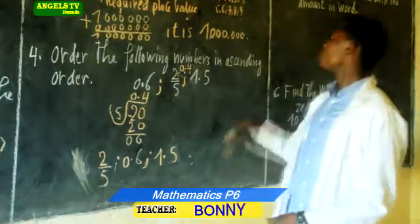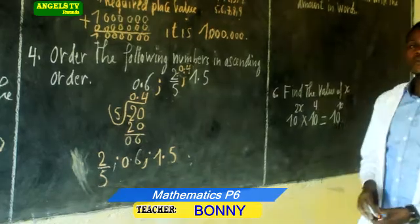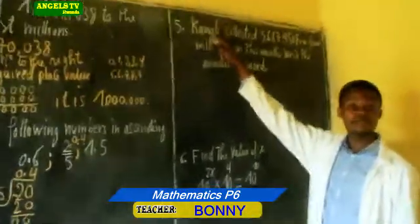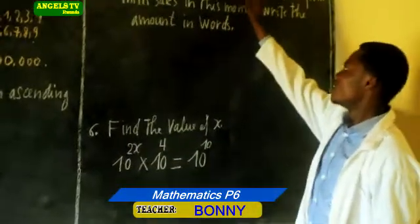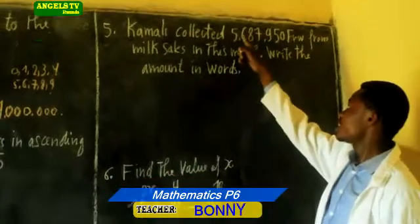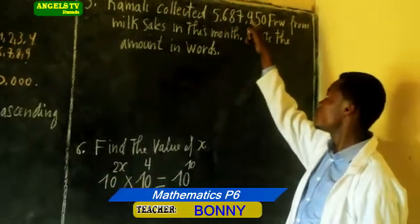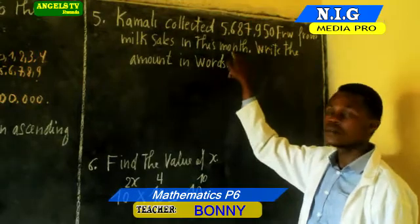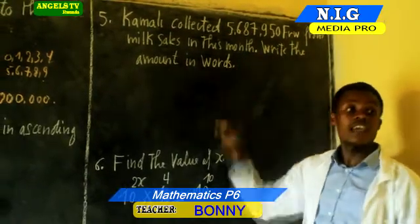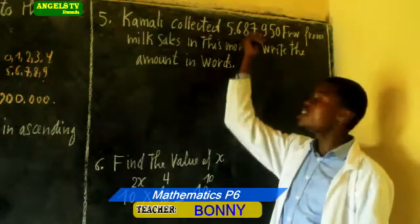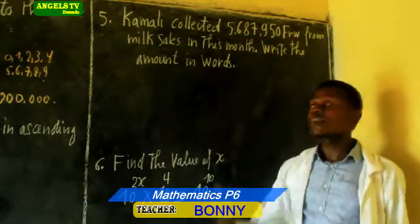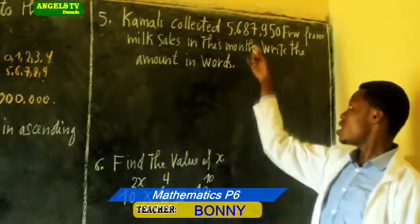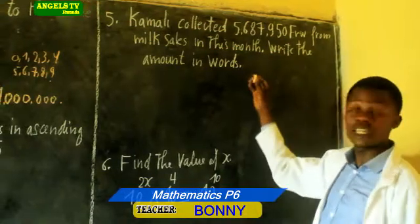So let us move on to number 5. Number 5 says that Kamal collected 5,687,950 Francs from milk sales. Write the amount in words. Here the task is writing this number in words. It is very simple. When you are writing this number in words, you can use a place value table. We know that when writing a number using a place value table, we have the column of units, the column of thousands, and the column of millions.